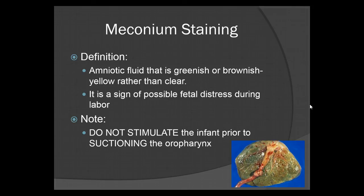Meconium staining is a very large issue during delivery. It is amniotic fluid that is greenish or brownish-yellow rather than clear, usually occurring when the infant defecates into the amniotic sac — usually caused by fetal distress during labor. If you notice meconium staining, do not stimulate the infant prior to suctioning the oral pharynx. If they aspirate any of the meconium, they could end up with a very serious pneumonia or infection that could jeopardize their life. Suction immediately and thoroughly before any stimulation is given.